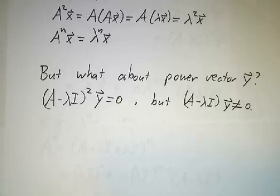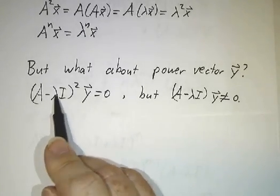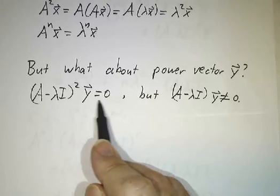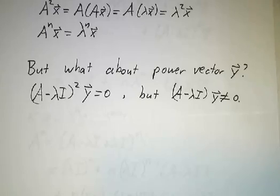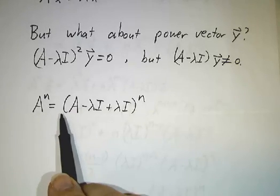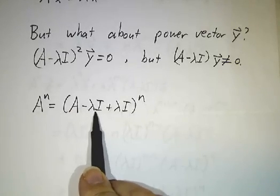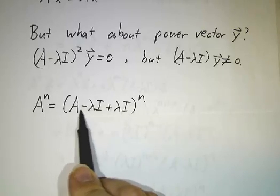But now, what happens if we have a power vector where A minus lambda I squared acting on y is 0, but A minus lambda I y is not 0? It's a bit more complicated, but not super complicated. You see, we can write A as A minus lambda I plus lambda I. And then we can take, this is the sum of two matrices.